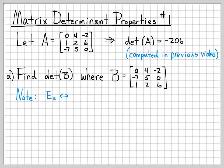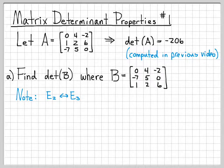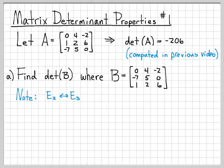Notice something. Matrix B looks just like matrix A, except rows 2 and 3 have been swapped with each other. So these two rows have been interchanged. Using row operation notation, we tend to write E2, E3 — thinking of equations 2 and 3, though they're really just rows. We've swapped those two rows.